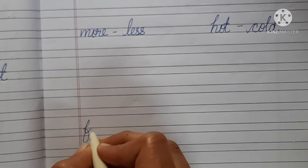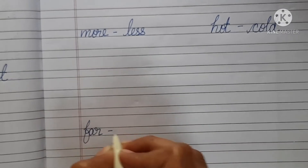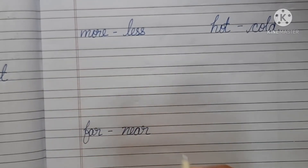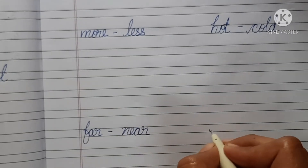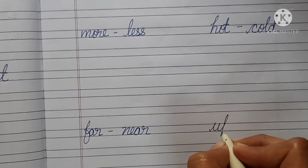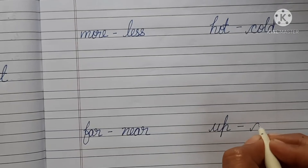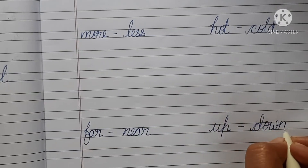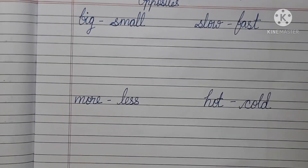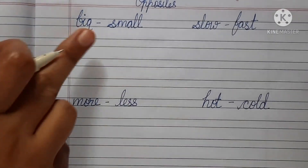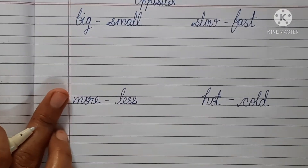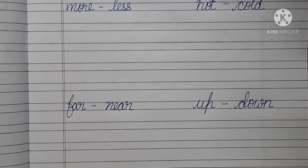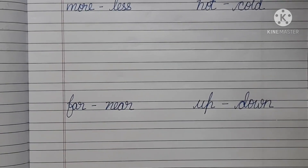Then, far — the opposite of far is near. Up — the opposite of up is down. Go on writing; write one spelling at least three to four times. Write this and send me your homeworks. Thank you, students.